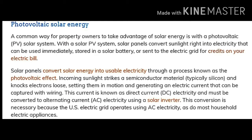Incoming sunlight strikes a semiconductor material, typically silicon, and knocks electrons loose, setting them in motion and generating an electric current that can be captured with wiring. This current is known as direct current (DC) electricity and must be converted to alternating current (AC) electricity using a solar inverter.